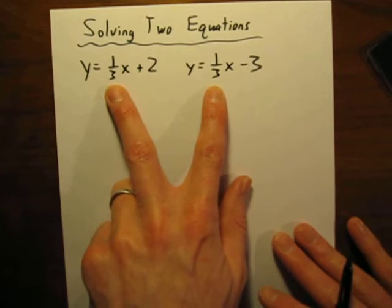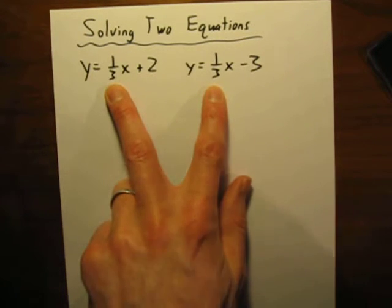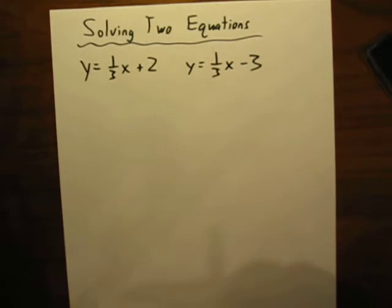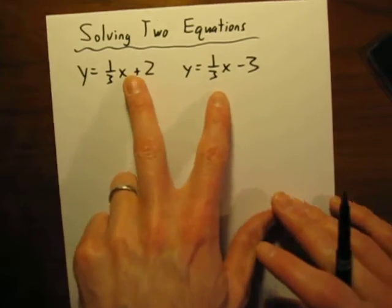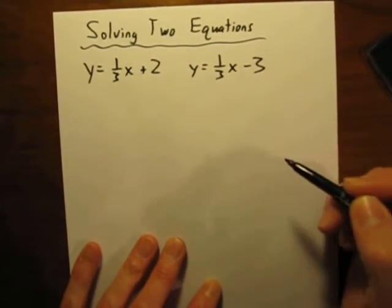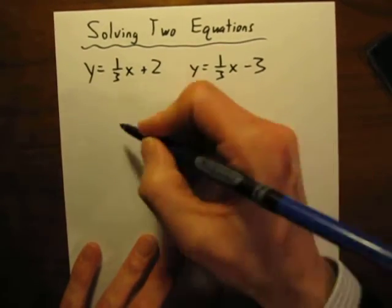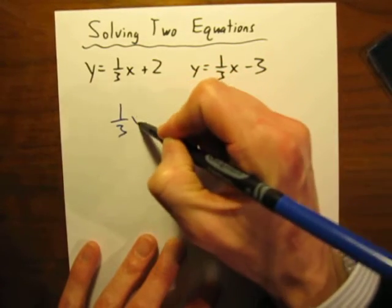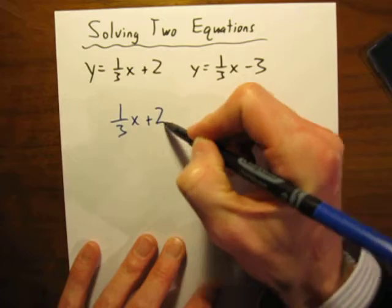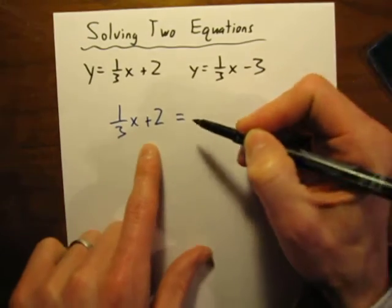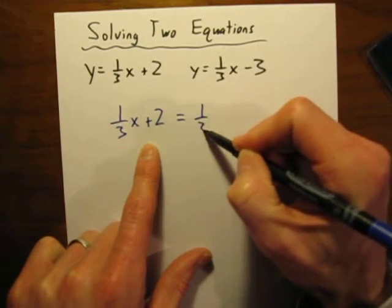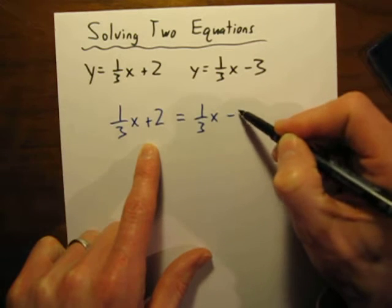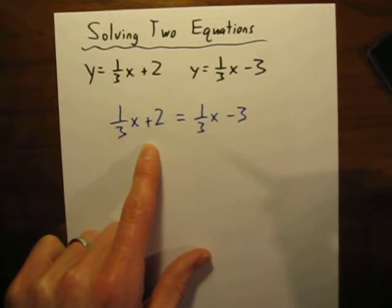The solution will be, the answer will be, no solution. But let's say you weren't so observant. What would it look like if you actually tried to solve these? So, let's go about solving this like we would any other pair of equations. And we do that by setting them equal to one another. So, 1/3x + 2 = 1/3x - 3. We just set them equal to one another.